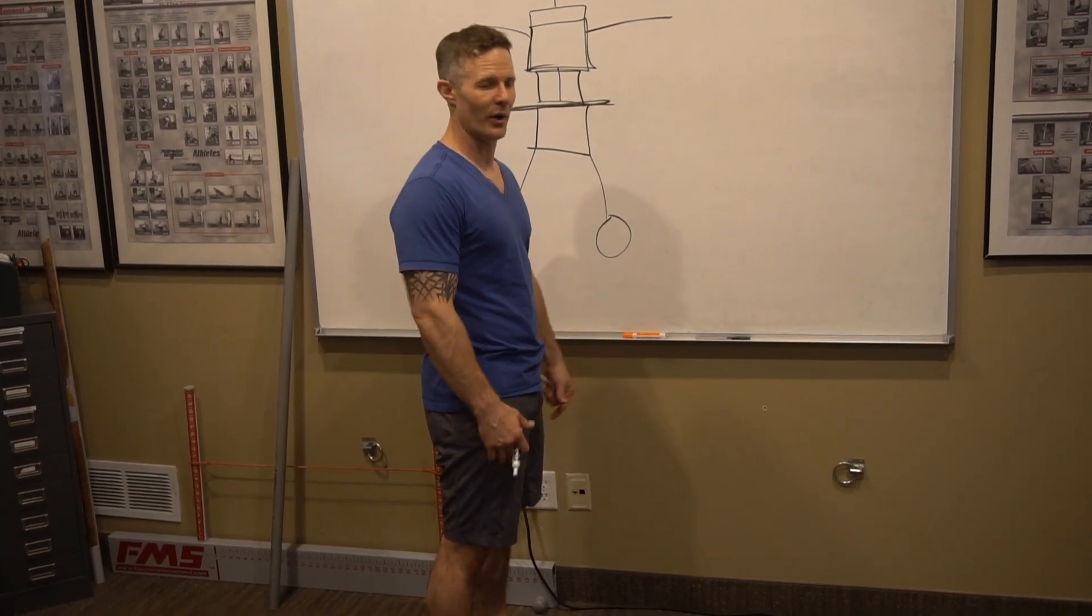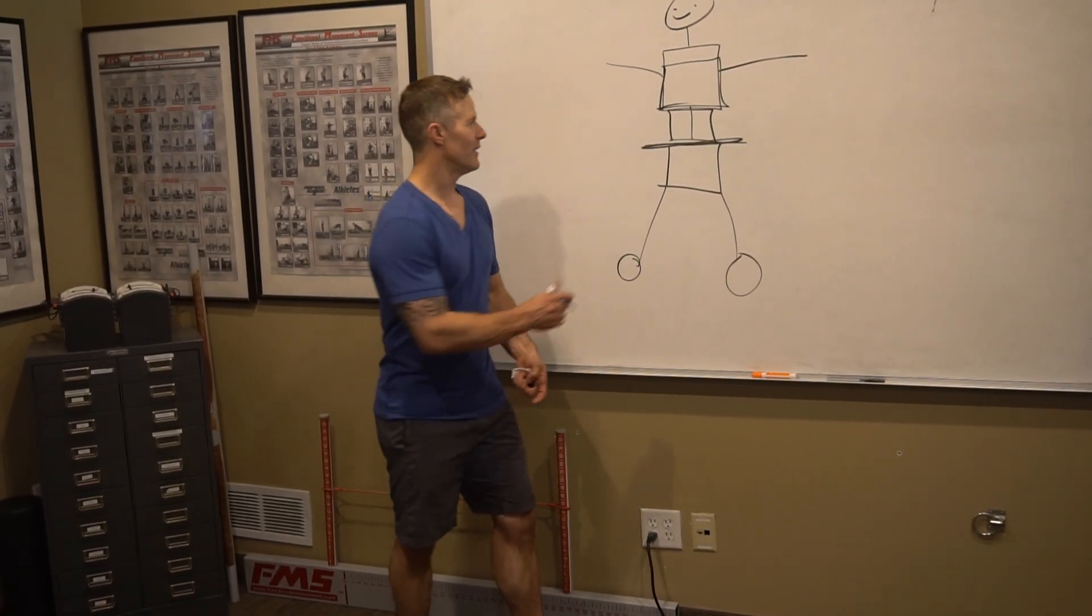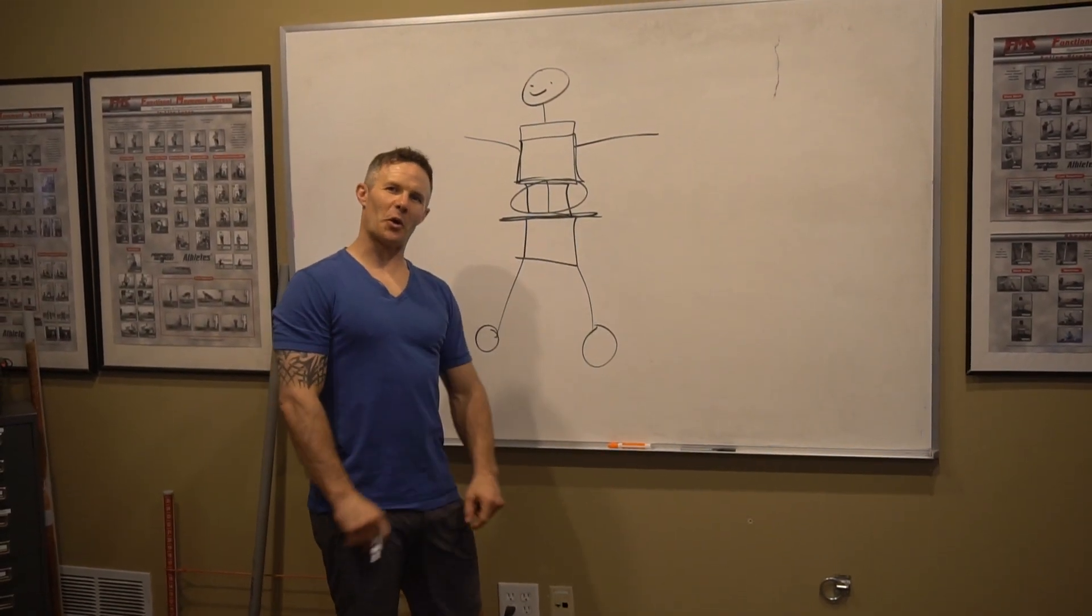Ribs down always will level out your pelvis, it'll level out your upper extremity, and it'll make it a lot easier to brace that core.